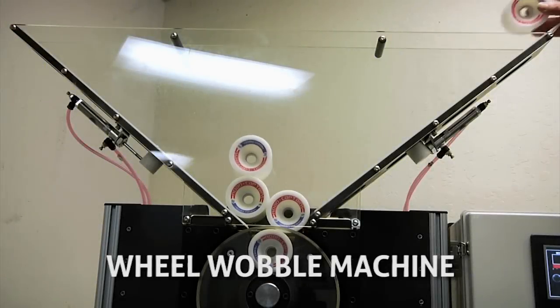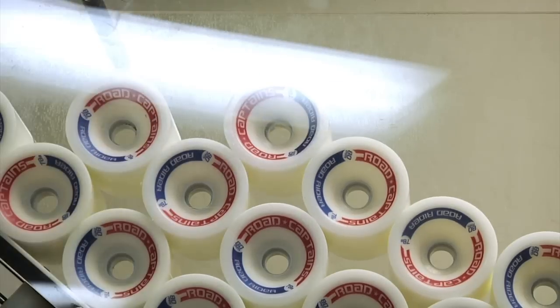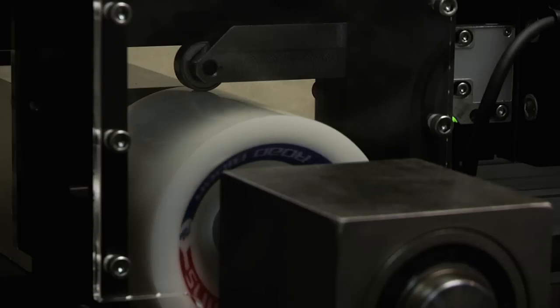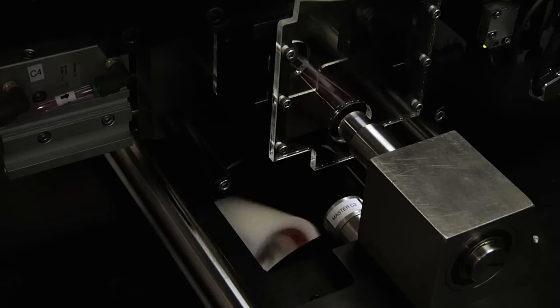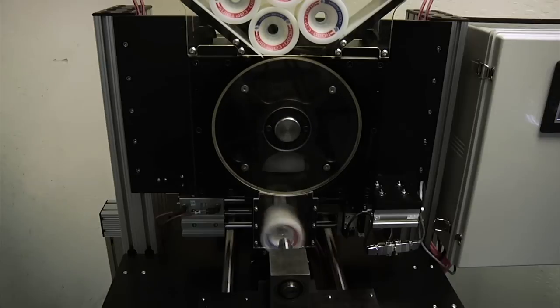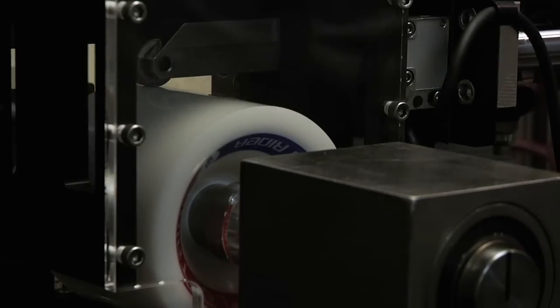This is the automated wheel concentricity tester. Every wheel made goes through the tester to ensure the wheels roll smooth and without wobbles. The wheels are placed in a large hopper and one by one each wheel falls into the placement carousel. Then they're rotated into the measuring fixture.